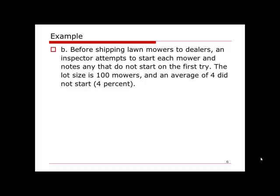Part b says: before shipping lawn mowers to dealers, an inspector attempts to start each mower and notes any that do not start on the first try. The lot size is 100 mowers, and an average of 4 did not start (4 percent). If you remember, when we use p-chart, the output can be classified into one of two categories. Here it is clear: anyone that do not start on the first try and anyone that do start on the first try are the two categories.